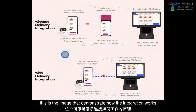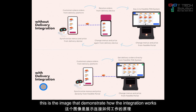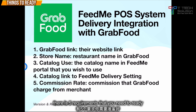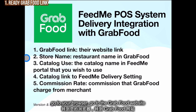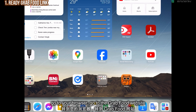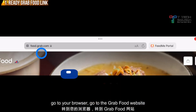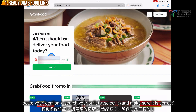This is the image that demonstrates how the integration works. There are five requirements that you need to do. First, you need to provide the GrabFood link. Go to your browser, go to food.grab.com and locate your location, then just click search.